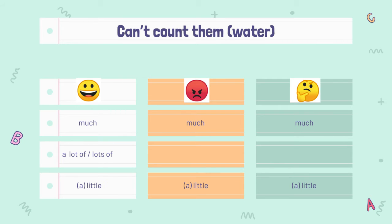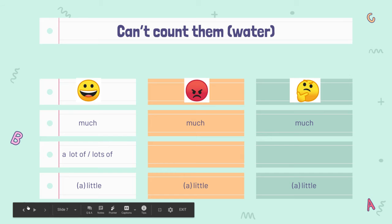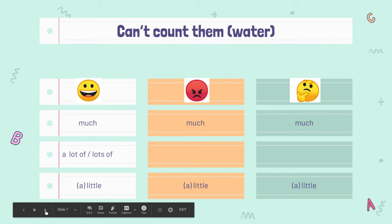If you can't count them, like water, then in a positive sentence you say much — for example, 'I drank much water today' — or a lot of, or lots of. Or 'I drank little water today.' In a negative sentence, only much and little. In a question, only much or a little. So, the key rule is: can you count them, or can't you count them? That is important.